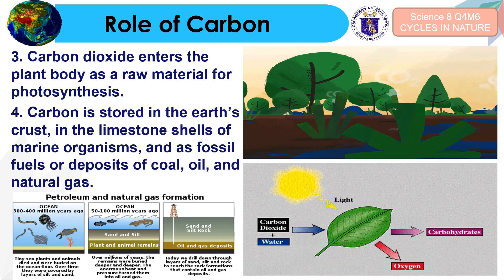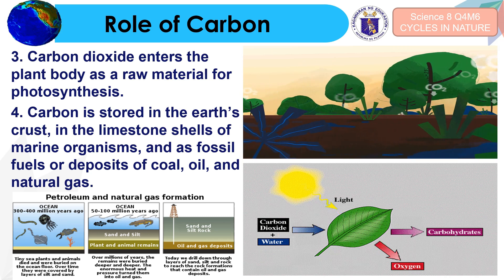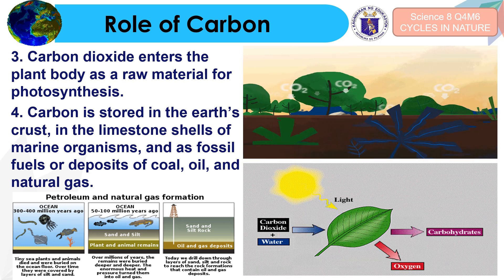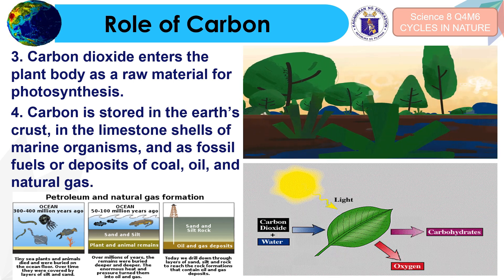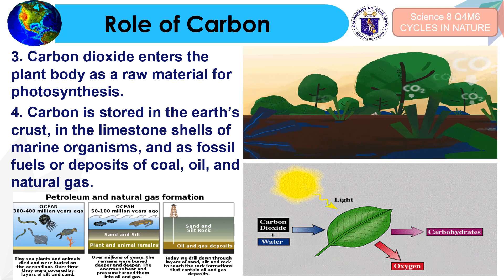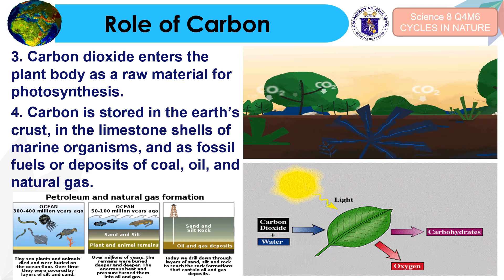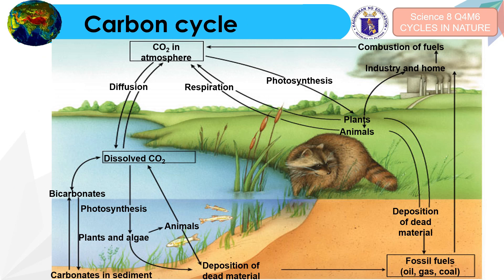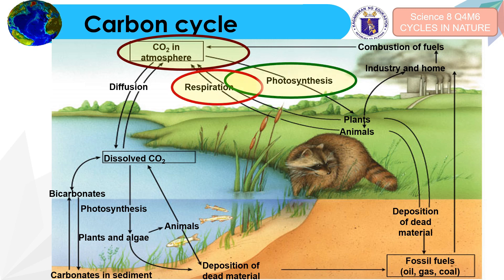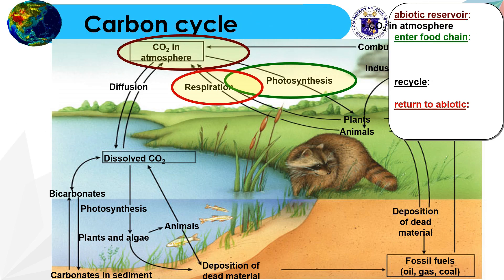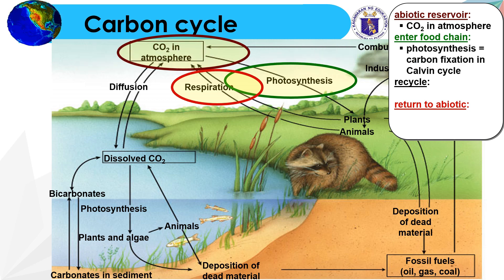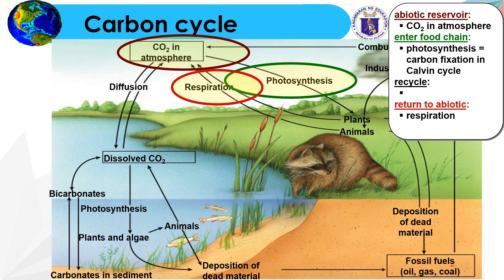Carbon dioxide enters the plant body as a raw material for photosynthesis. Carbon is also stored in the earth's crust, in the limestone shells of marine organisms, and in fossil fuels such as coal, oil, and natural gas. To summarize the carbon cycle: carbon dioxide in the atmosphere is used in photosynthesis and respiration. It enters the food chain via photosynthesis, specifically carbon fixation in the Calvin cycle, and is recycled through respiration and combustion.